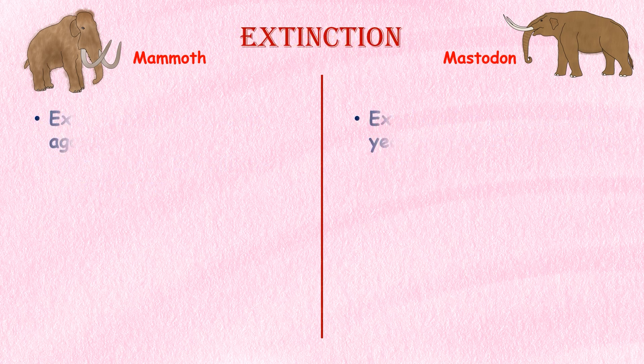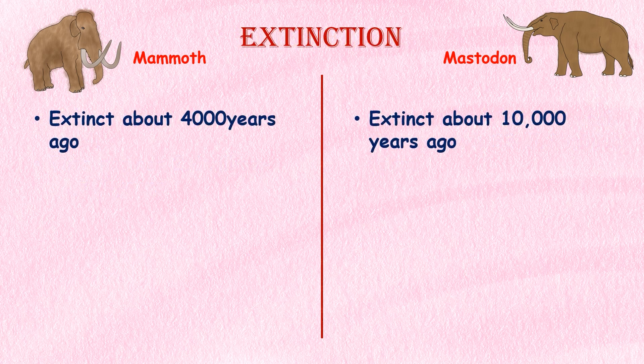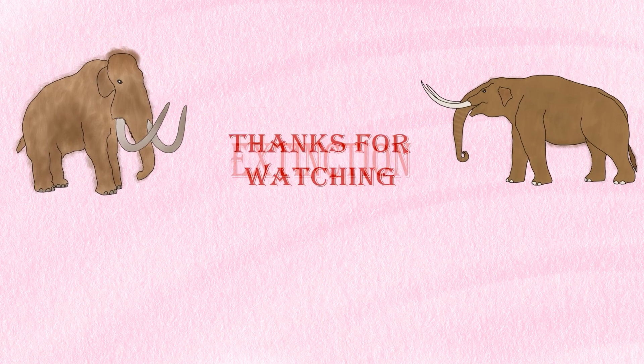Extinction. Both Mammoths and Mastodons went extinct towards the end of the last ice age, but at different times. Mastodons are believed to have disappeared from North America around 10,000 years ago, while Mammoths persisted in some regions until as recently as 4,000 years ago.